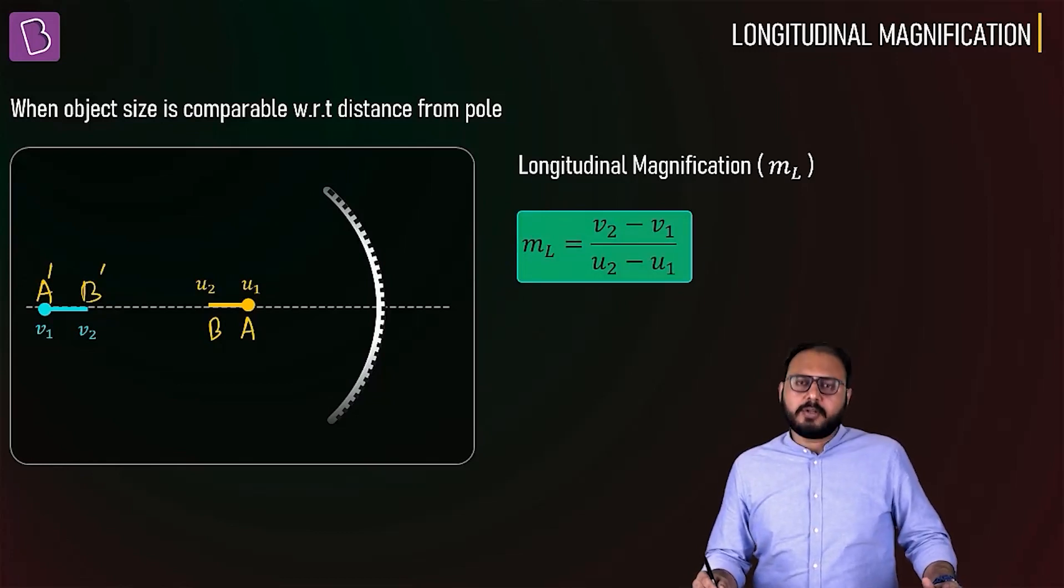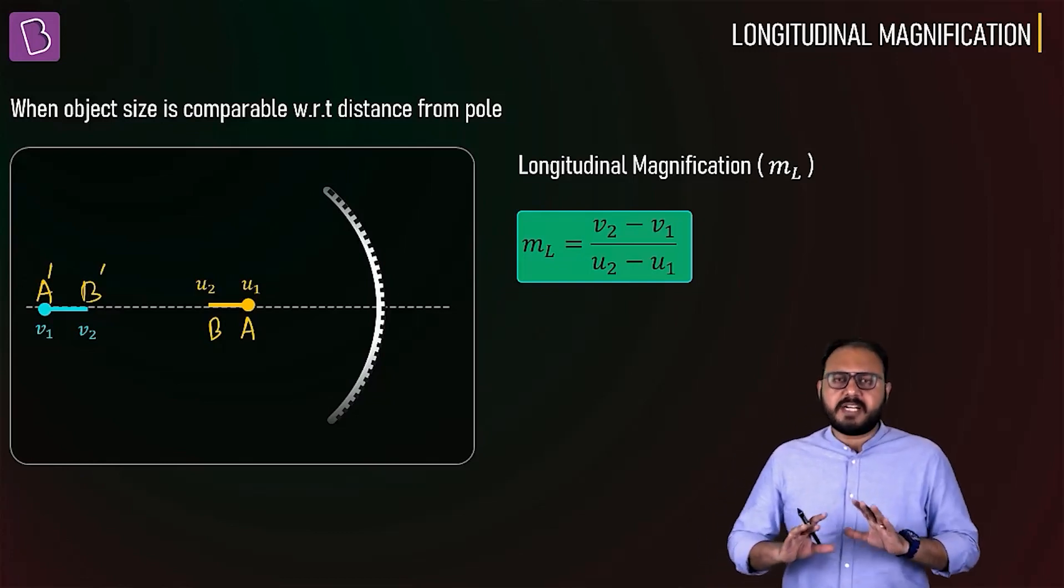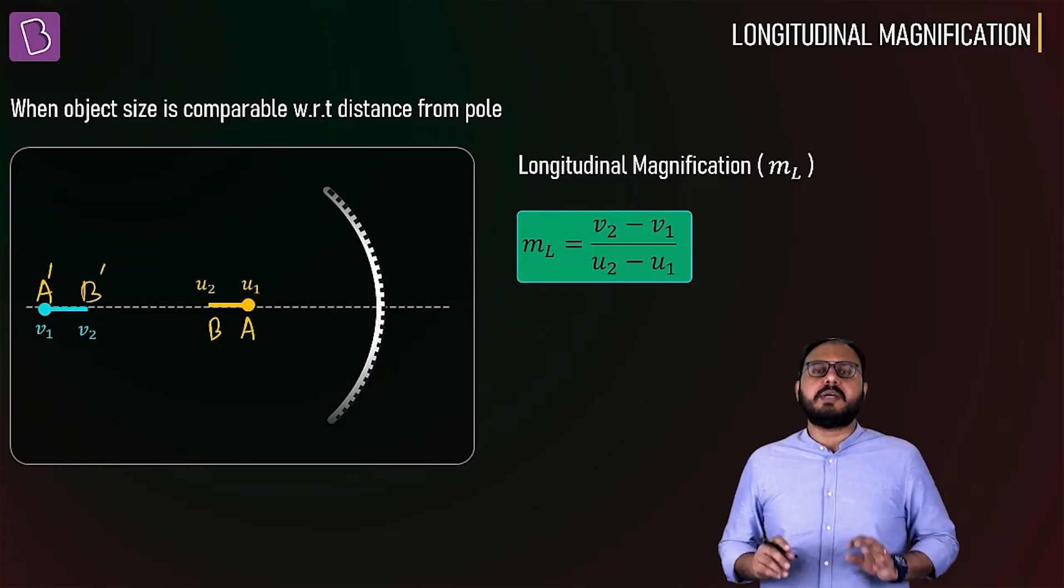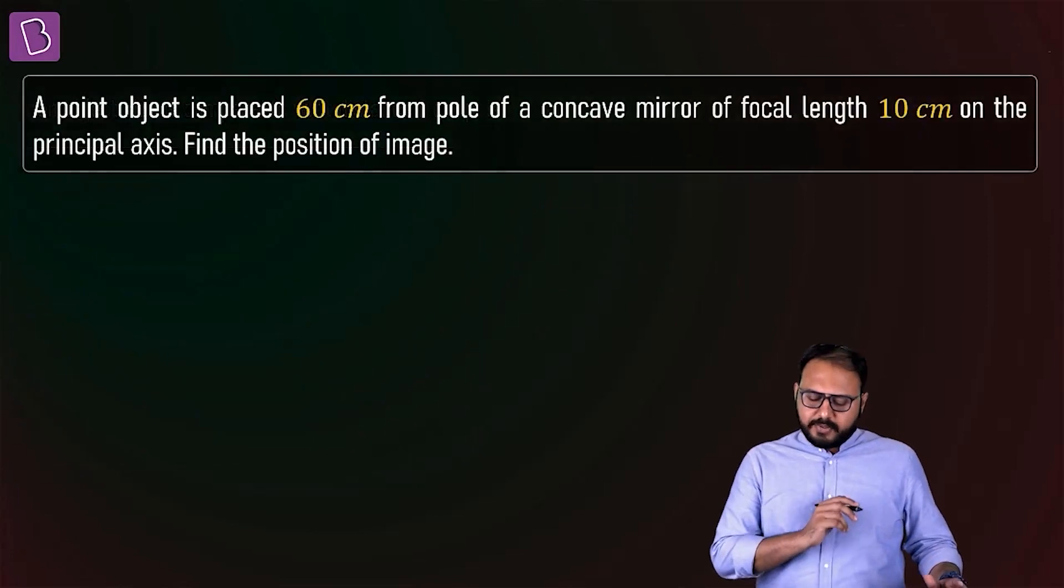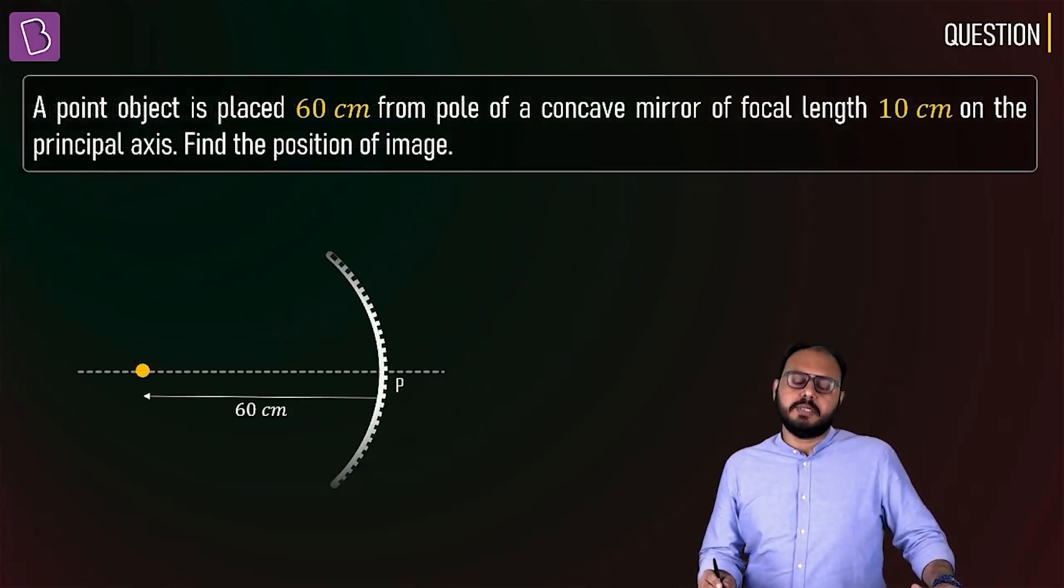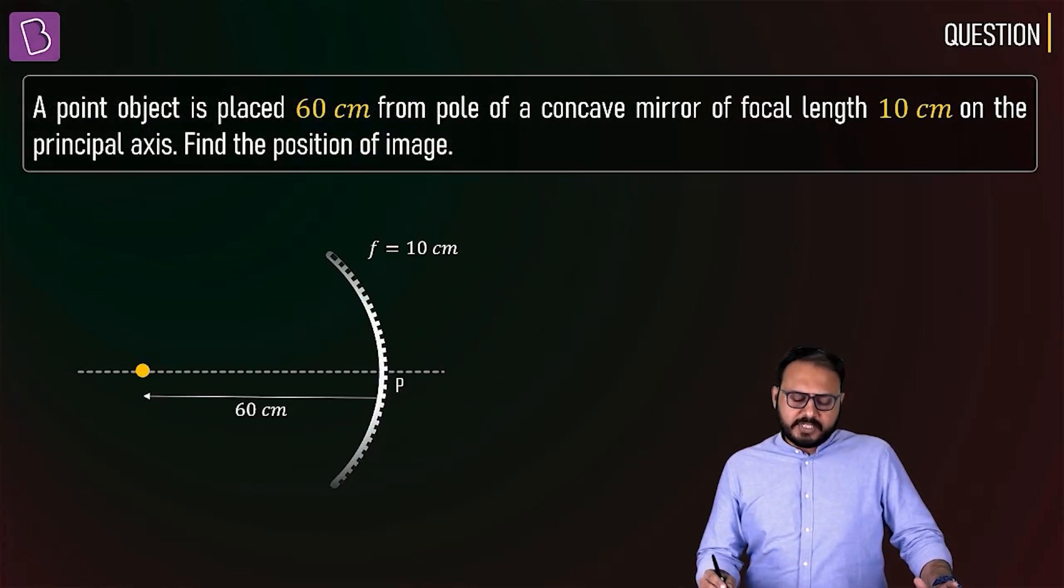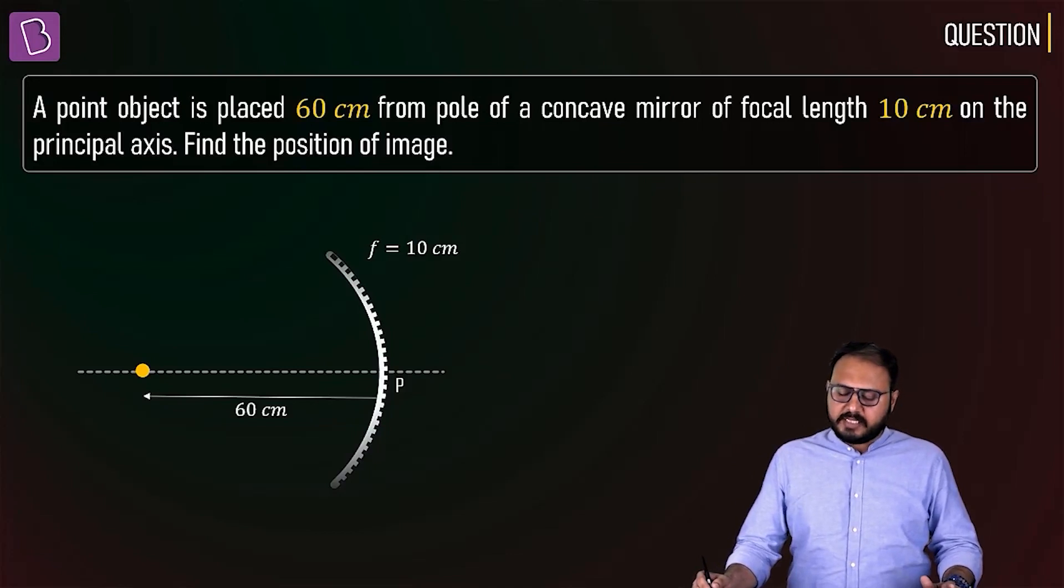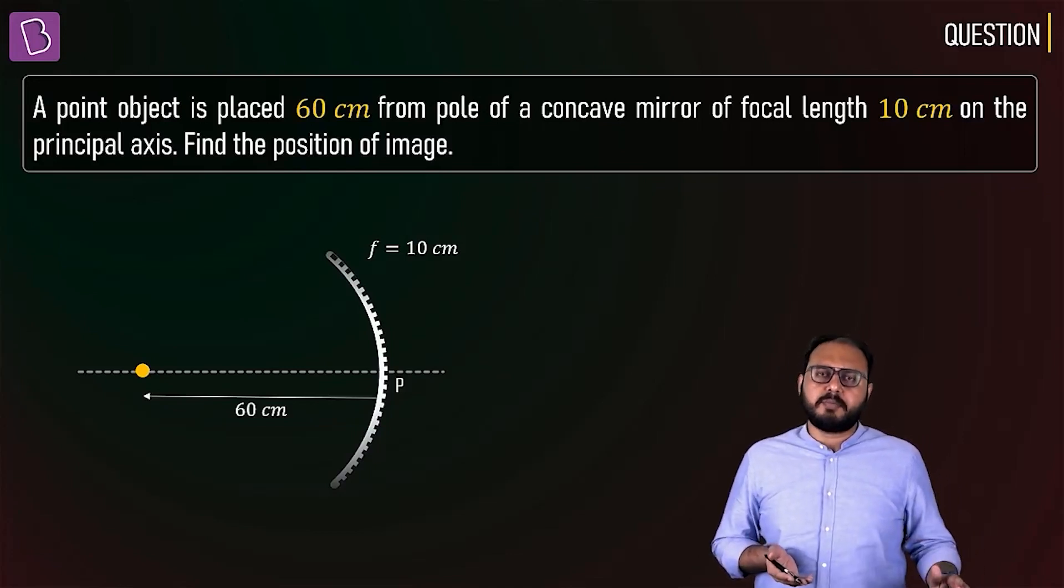First let me give you the problem. The caveman approach of an object lying on the principal axis is to find out the image of the extreme positions. But what if life is not that simple? You have an object at 60 centimeters from the pole of a concave mirror of focal length 10 centimeters. Find the position.